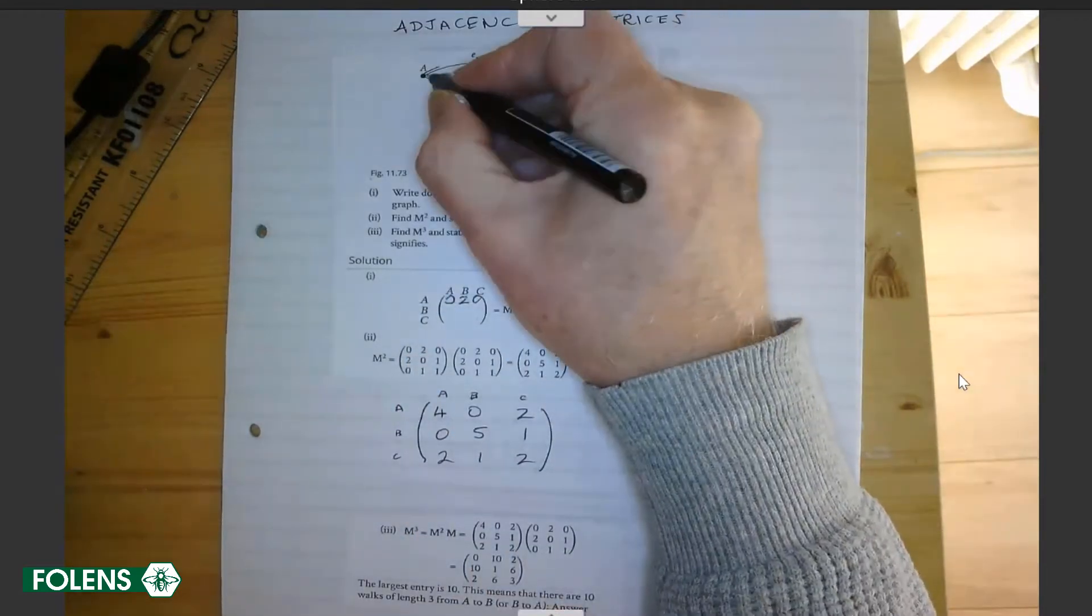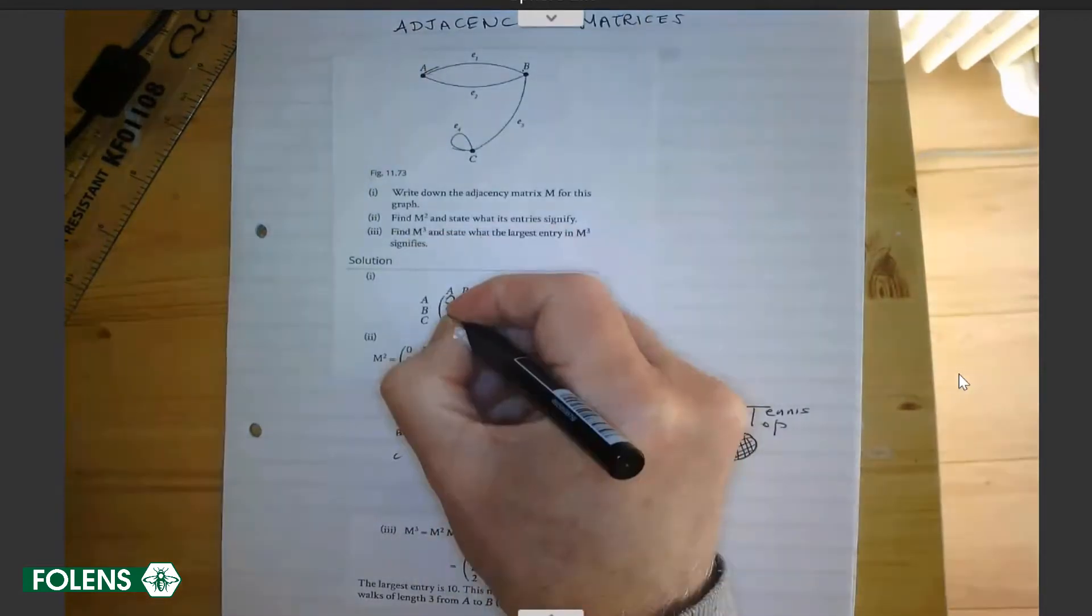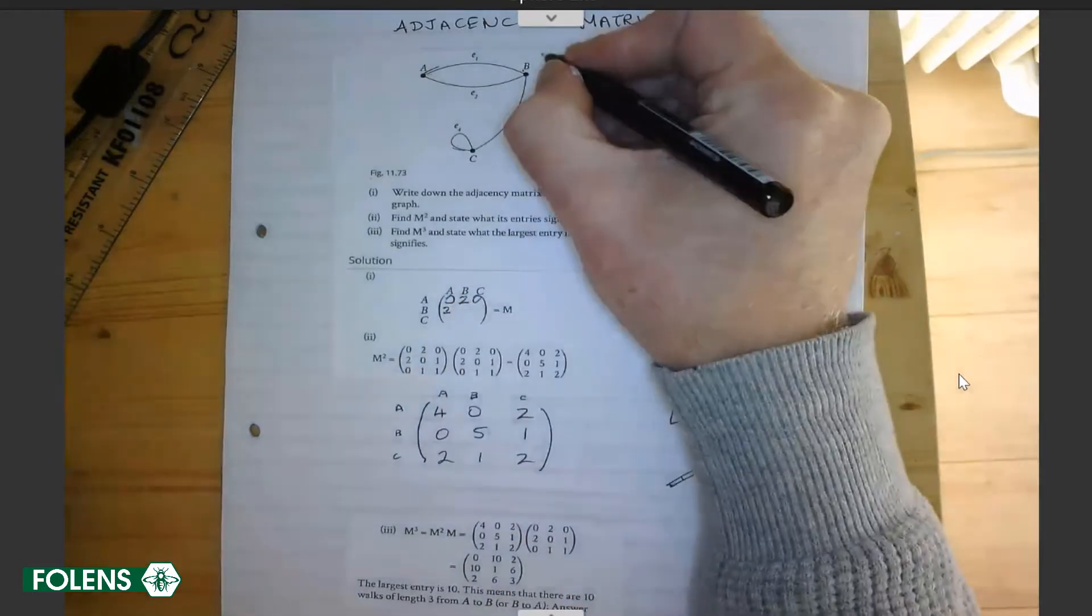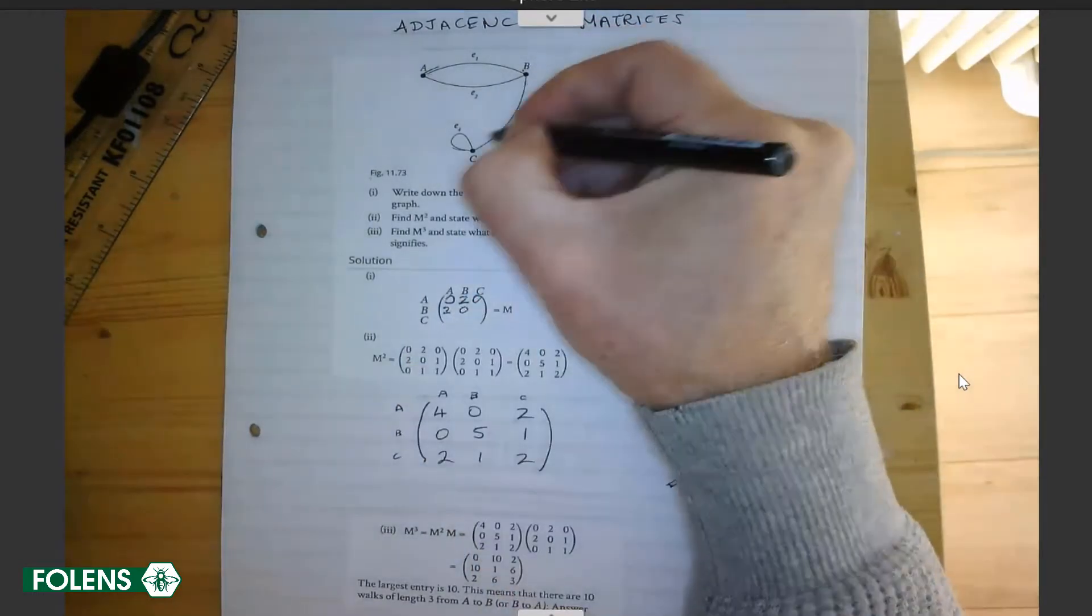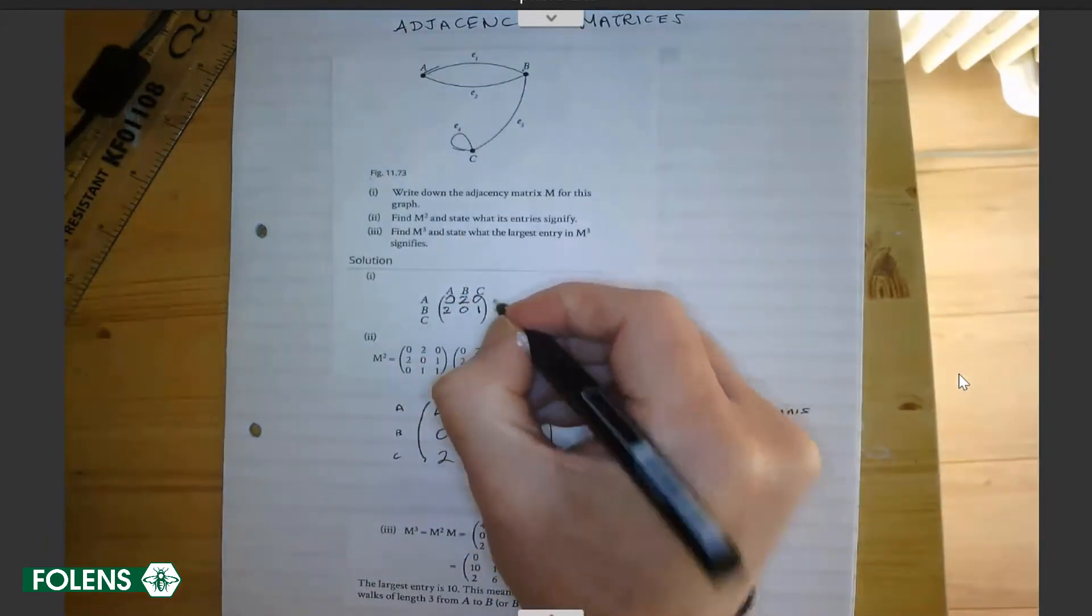What about B? Well, you can go the north road or the south road to A. There are two ways of going to A. From B to B, there are no loops, so that's a zero. From B to C, there's just one way.